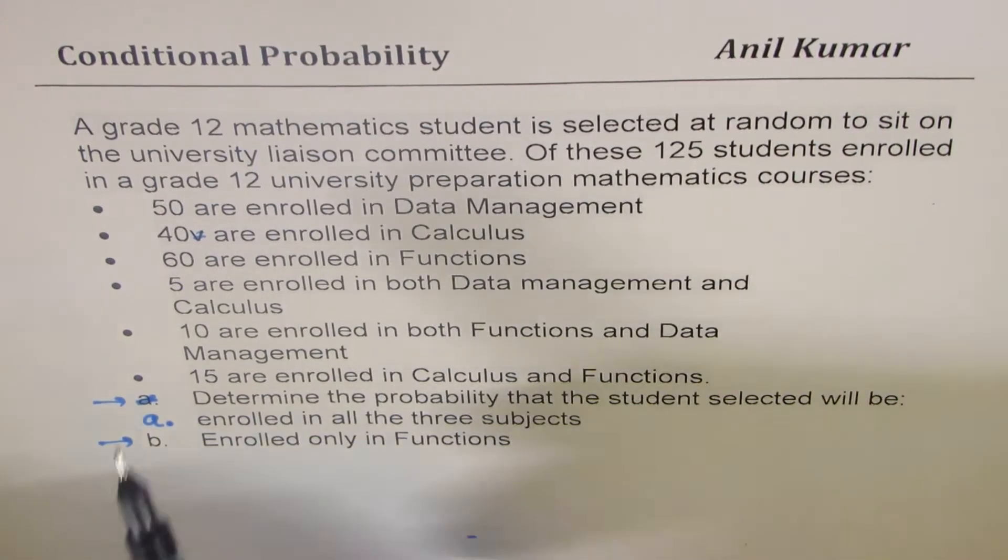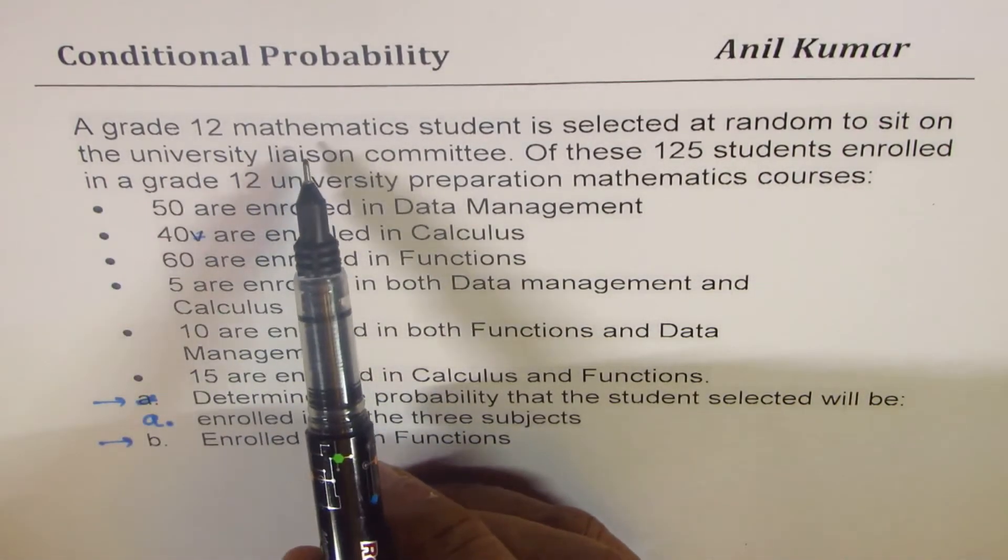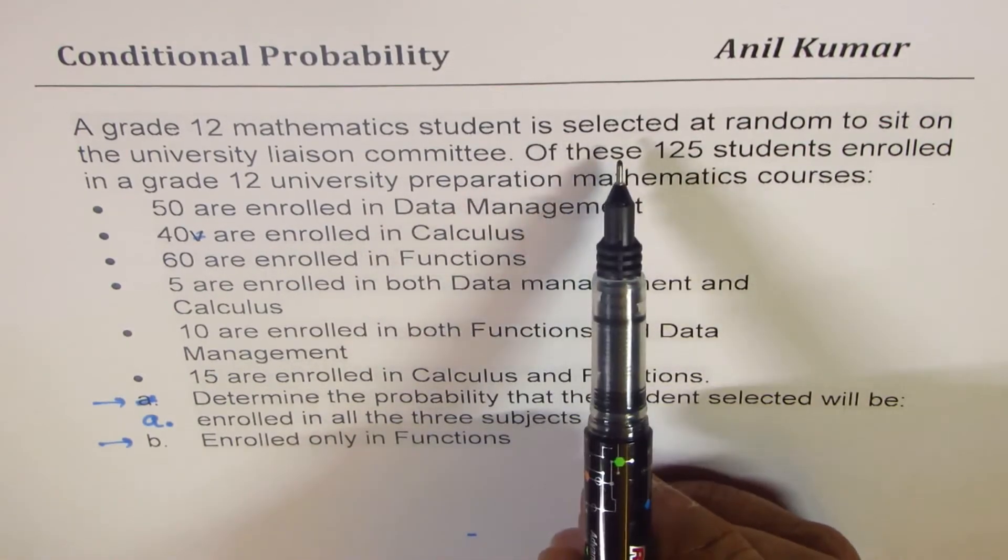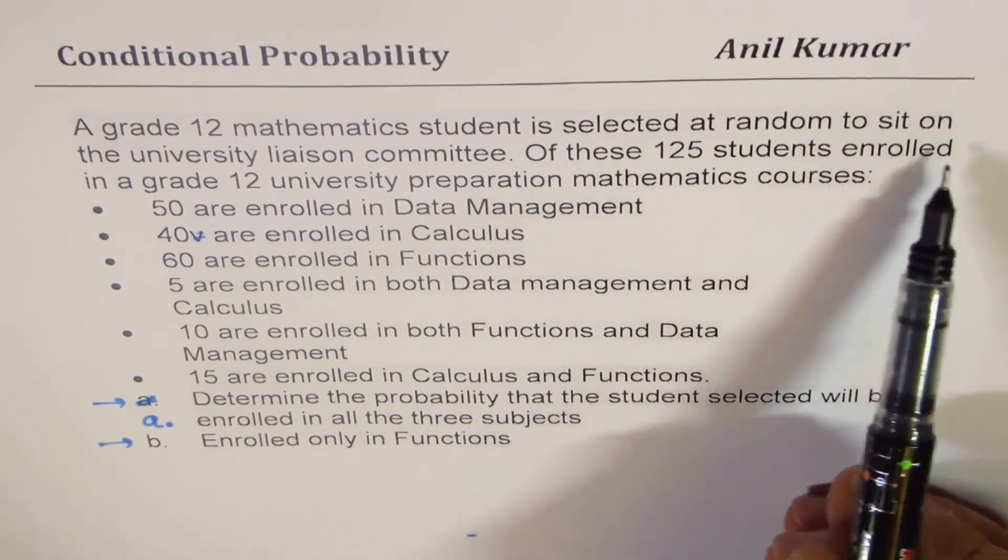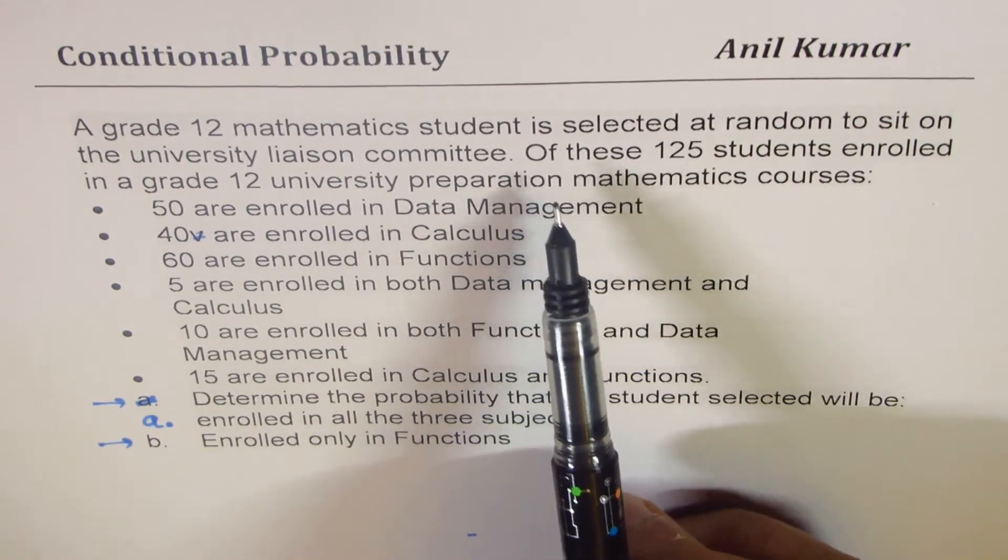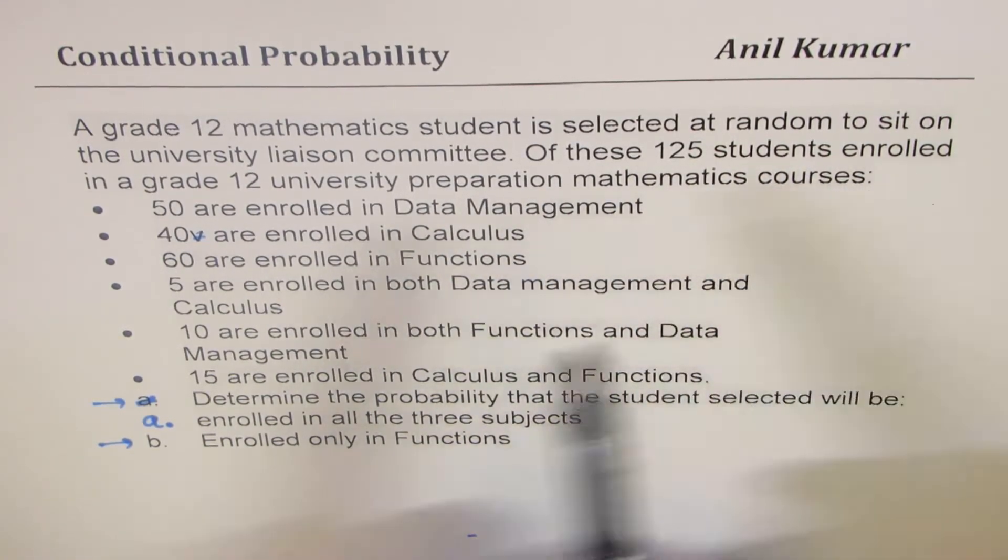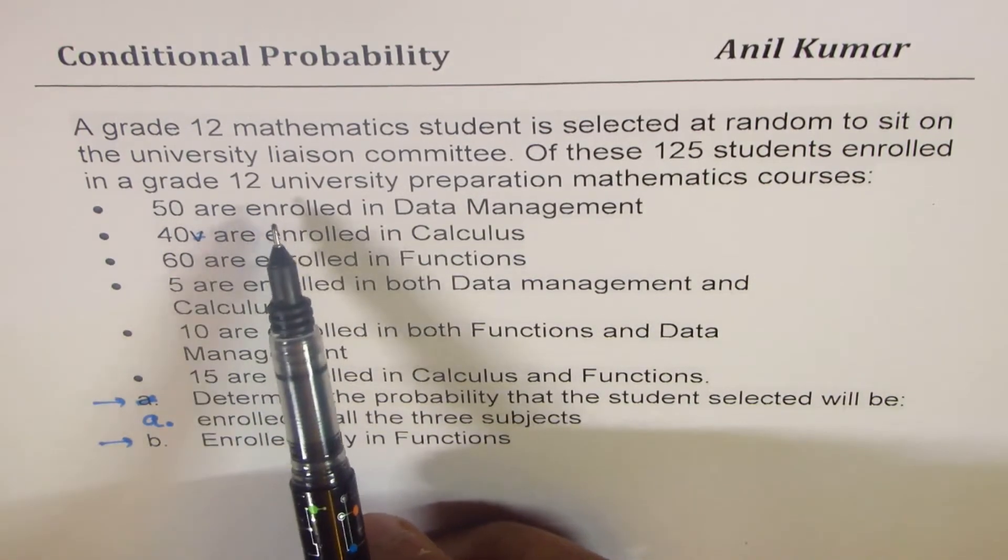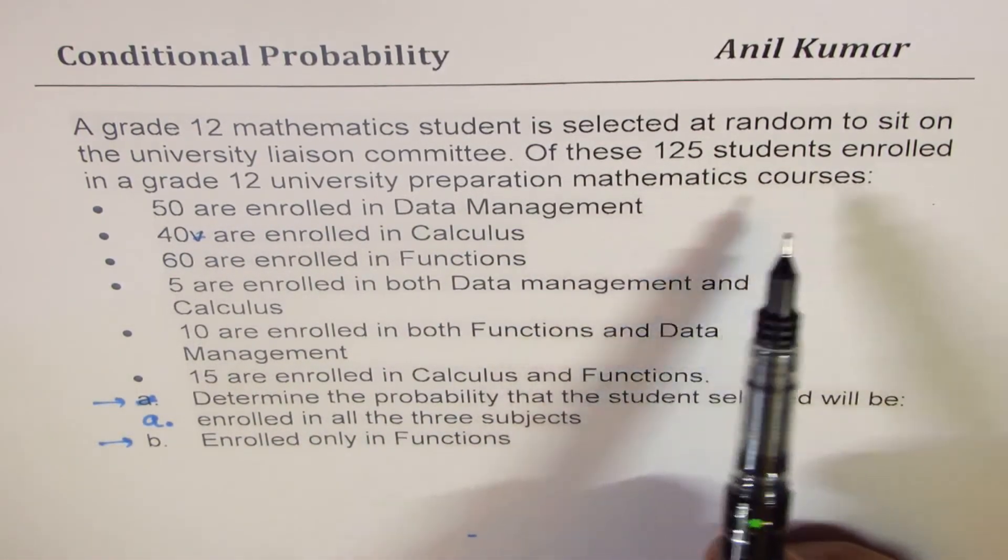The question here is, a grade 12 mathematics student is selected at random to sit on the university liaison committee. Of these 125 students enrolled in a grade 12 university preparation mathematics course: